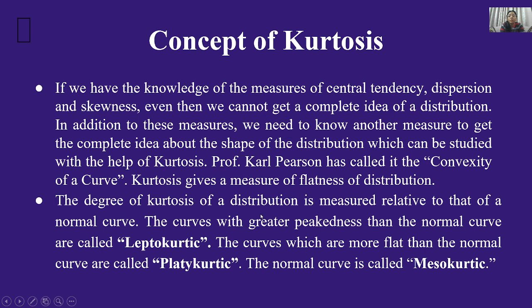The degree of kurtosis of a distribution is measured relative to that of a normal curve. Curves with greater peakedness than the normal curve are called leptokurtic. Curves which are more flat than the normal curve are called platykurtic. The normal curve itself is called mesokurtic. So: normal curve = mesokurtic; more flat = platykurtic; more peaked = leptokurtic.